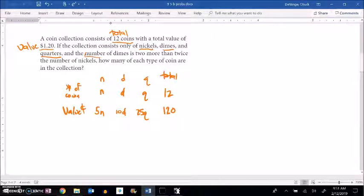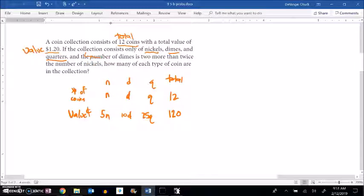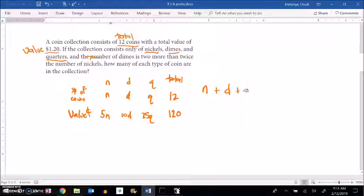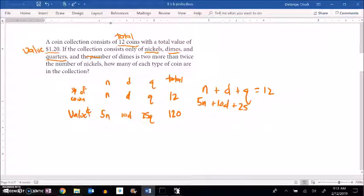So there's two equations right there. And we'll get to this next part in a minute. I know that n + d + q = 12. I also know that 5n + 10d + 25q = 120 cents.